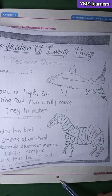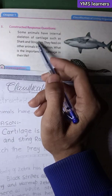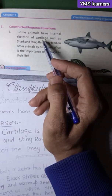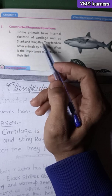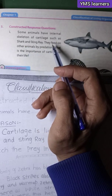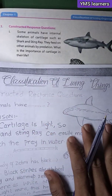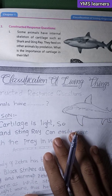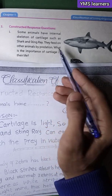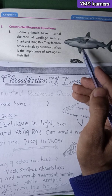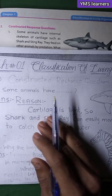Page number 18: Some animals have an internal skeleton of cartilage, such as sharks and stingrays. Their internal skeleton is made of cartilage tissue. They feed on other animals by predation. What is the importance of cartilage in their life? We will now form the answer with reasoning.